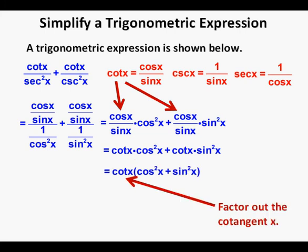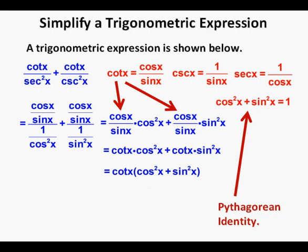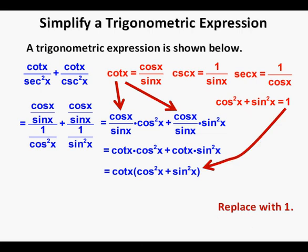From here we can factor out the cotangent of x from each term. Now we can go to our identities and get our Pythagorean identity: sine squared x plus cosine squared x equals 1. So we can replace cosine squared x plus sine squared x with 1. This simplifies to the cotangent of x times 1, which simplifies to the cotangent of x — boxed in as our correct answer.